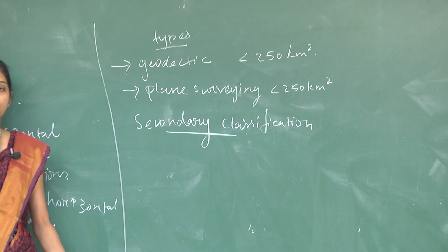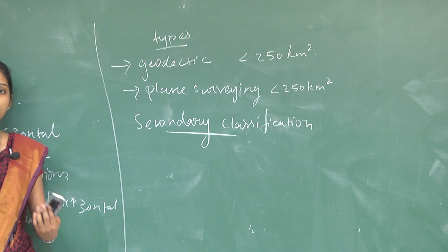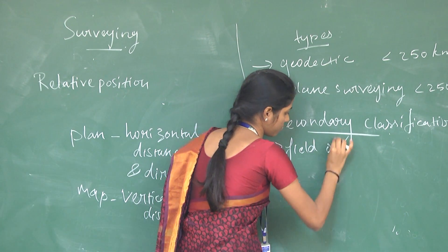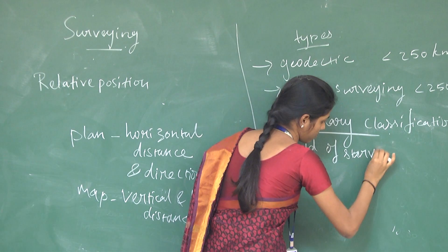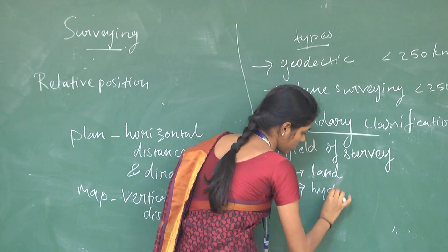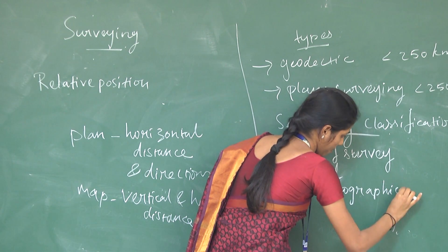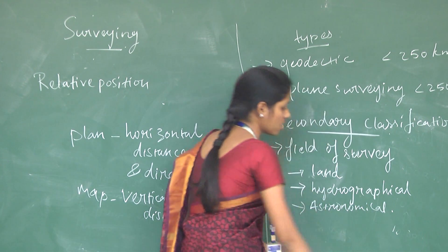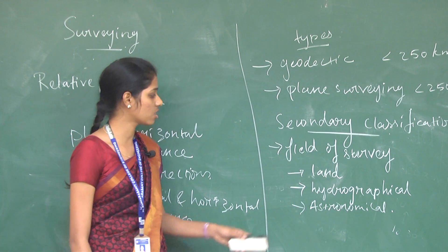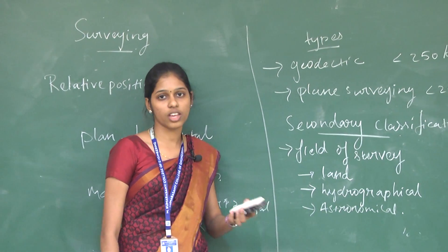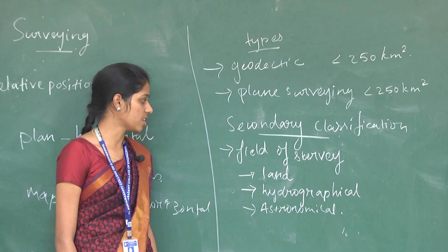Surveying is further classified into several types based on various factors. Based on the field of surveying, it is classified into three types: land surveying, hydrographical surveying, and astronomical surveying. Surveying land is land surveying; surveying a water body is hydrographical surveying; and surveying an area in space is astronomical surveying.